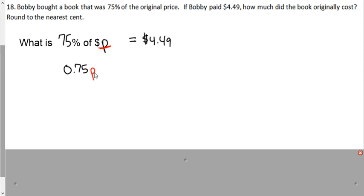75% is 0.75. It needs to multiply the original price, and I'm just going to represent that with a P. When you set a variable next to a number, it means that it's multiplying. So 0.75P really means 75% of the price. This equal sign here could be called 'is': 75% of the original price is $4.49.